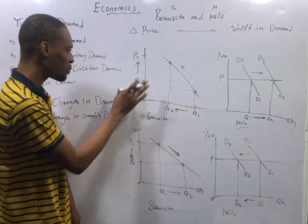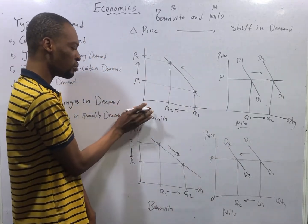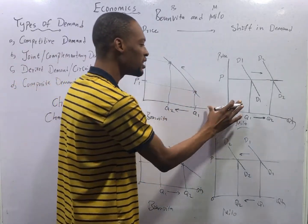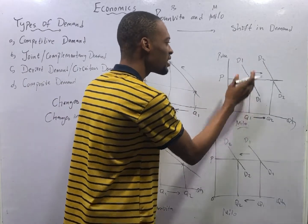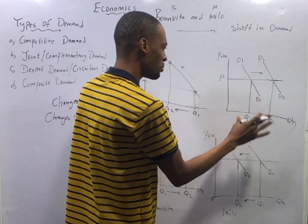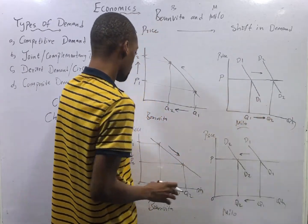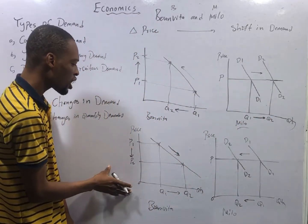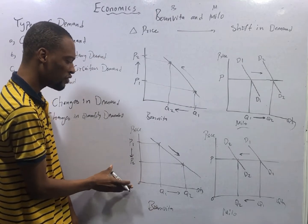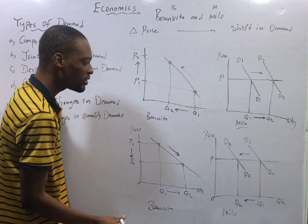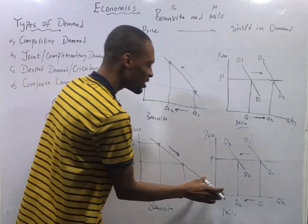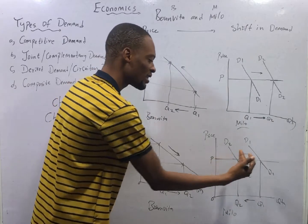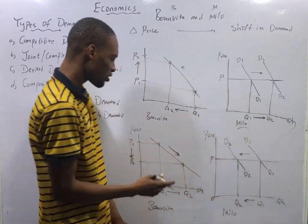So to summarize: an increase in the price of Bonvita will lead to a shift in demand for Milo — an increase in demand. A drop in the price of Bonvita will lead to a shift in demand for Milo — a decrease in demand.